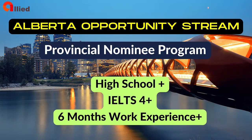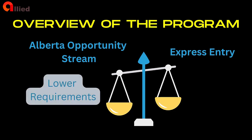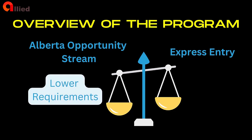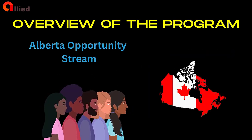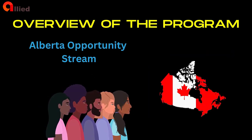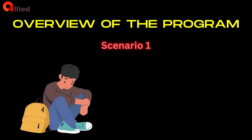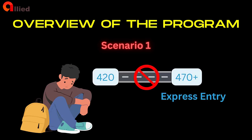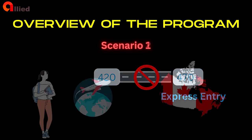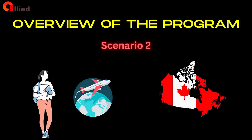The Alberta Opportunity Stream is a provincial nominee program with lower requirements compared to the Express Entry program. It offers a potentially more accessible route for many individuals to apply for permanent residency. If you're an international student who graduated from a college or university in Alberta and you're finding it challenging to secure an invitation to apply through the Express Entry system, the Alberta Opportunity Stream could be an excellent alternative for you.